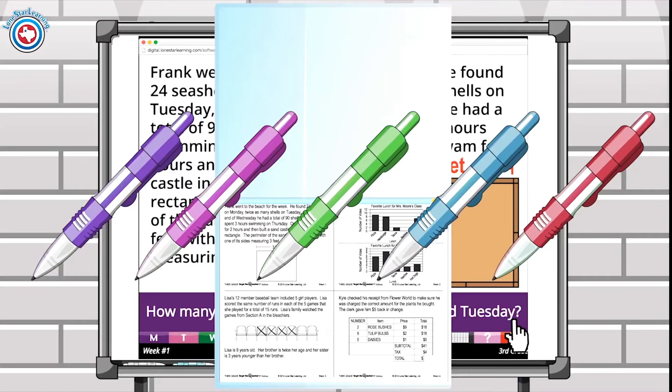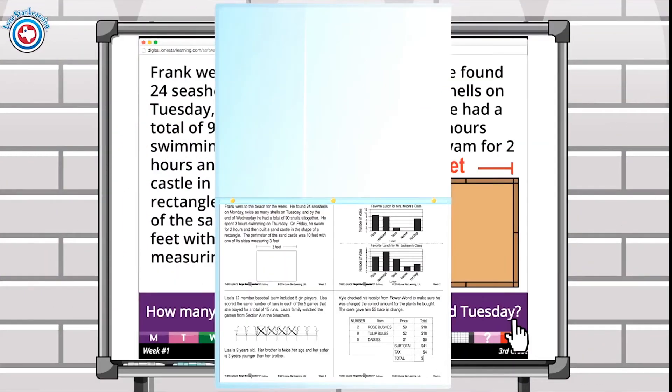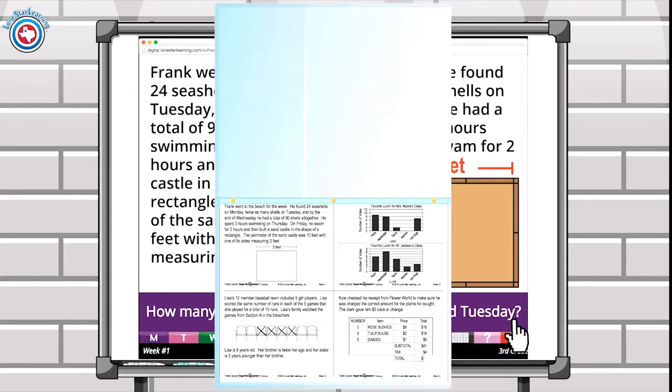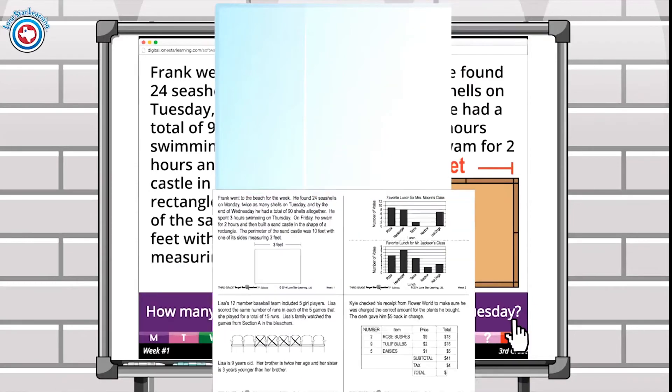Another option might be to place these sheets in page protectors and then place them in a brad pocket folder for each student. In this situation, students should annotate with a grease pencil. This can be erased and then used again the next day for a different question.